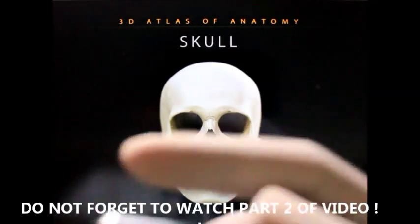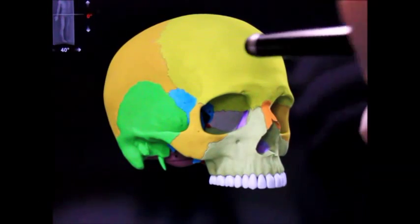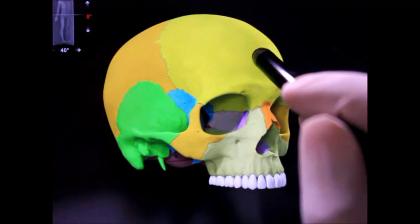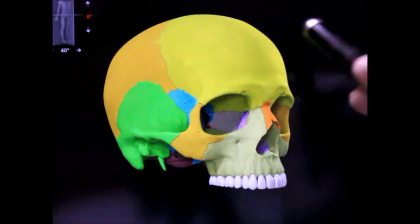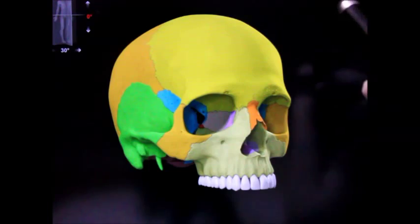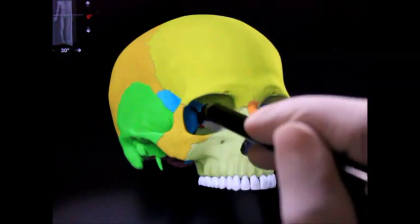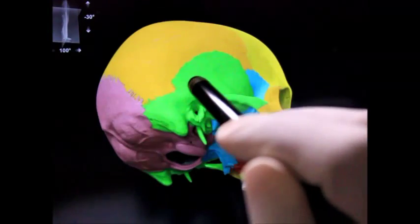Hello friends, welcome to the virtual anatomy classes. Today we are going to study the 3D atlas of anatomy, the cranium. The cranium consists of two parts: the neurocranium, which is the cranial vault, the bony covering that encloses the brain and its meninges within the skull.